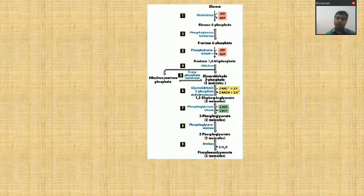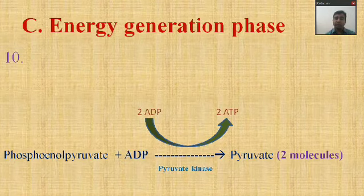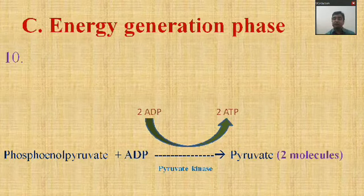Again shown in brackets as two molecules. The last reaction of glycolysis — reaction ten — is: the energy-rich molecule phosphoenolpyruvate plus ADP forms two molecules of pyruvate and two molecules of ATP. This reaction is catalyzed by the enzyme pyruvate kinase. That concludes the reactions of glycolysis.